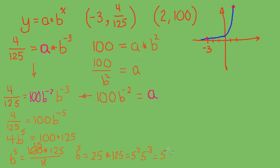Whoa, then if I took the 5th root of both sides, then I discovered that b has got to be 5. Okay, so I'm halfway to knowing what this equation is. I'm looking for an equation y equals a times b to the x power that goes through these two points.